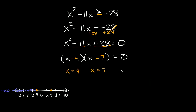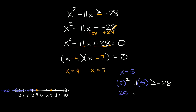Now let's test a point in the middle — let's say 5. Plugging in: 5 squared minus 11 times 5 is greater than or equal to negative 28. That's 25 minus 55, which is negative 30 is greater than or equal to negative 28. That's false — negative 30 is smaller than negative 28. So we have no real solutions in the middle between 4 and 7.